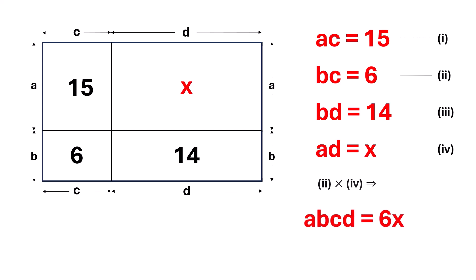Again, multiplying equation 1 and 3, we get AC times BD is equal to 15 times 14. Simplifying this, we can rewrite ABCD is equal to 15 times 14.